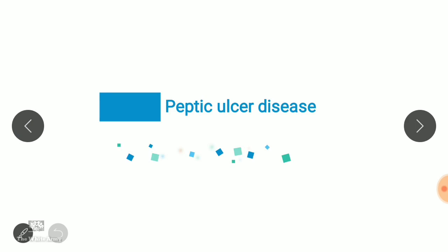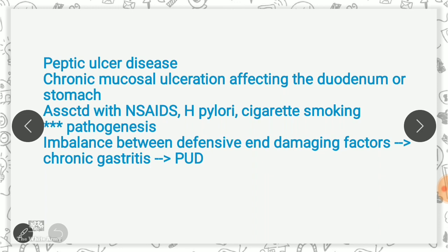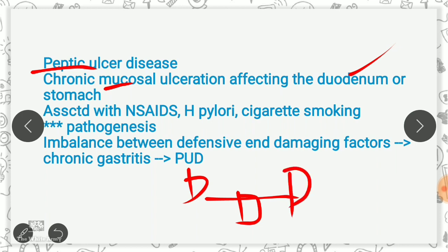Peptic ulcers by definition means chronic mucosal ulceration affecting the duodenum or stomach — either duodenum or stomach — together called as peptic ulcer disease. It is mainly associated with NSAIDs, H. pylori, and cigarette smoking. The pathogenesis involves an imbalance between defensive factors and damaging factors. When damaging factors exceed defensive factors, it leads to chronic gastritis, which may lead to peptic ulcer disease.